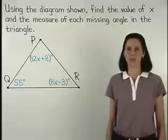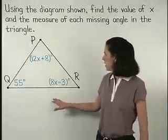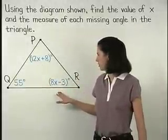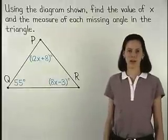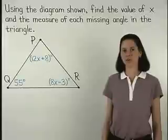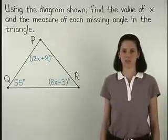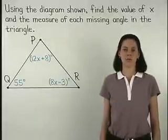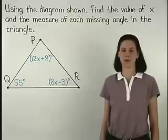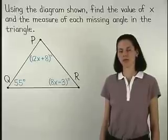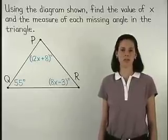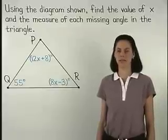In this problem, we're given a triangle and information about each of its angles, and we're asked to find the value of x and the measure of each missing angle in the triangle. Remember from the previous example that the measures of the angles of a triangle always add to 180 degrees.